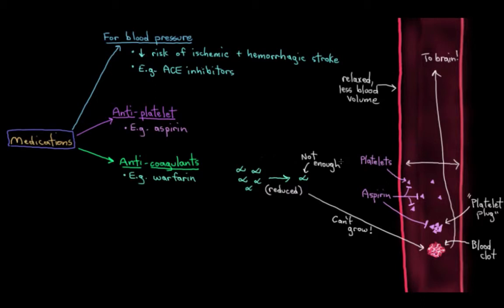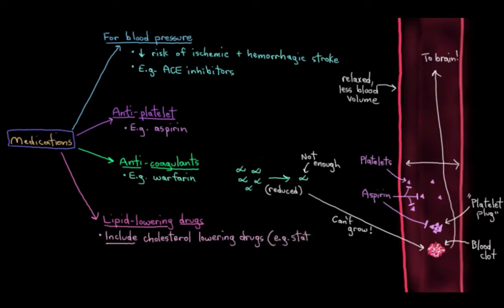The last major group of medications you might take to reduce your risk of stroke is the group of lipid-lowering drugs. You've probably heard of these as drugs to lower your blood cholesterol. There are a few different types that each work in a bit of a different way. For example, one type, the statins, work by preventing your liver from making cholesterol. You might have heard of a drug called Lipitor - that's actually the most commonly prescribed statin.